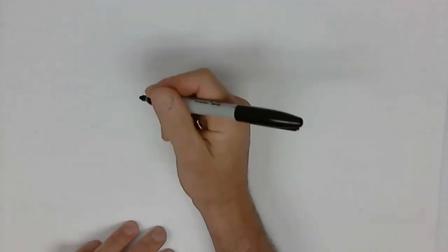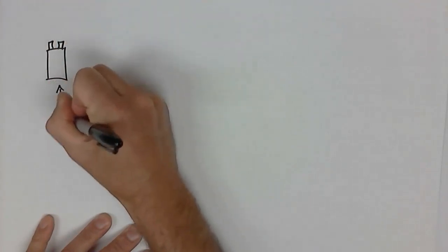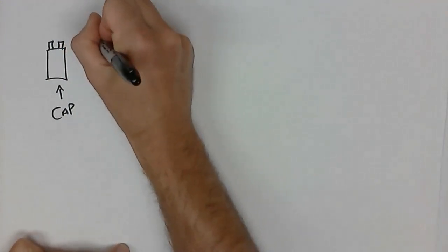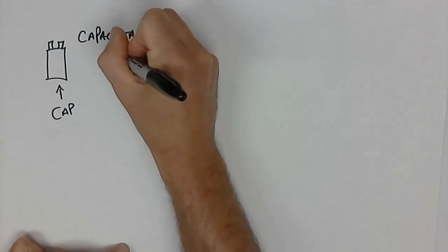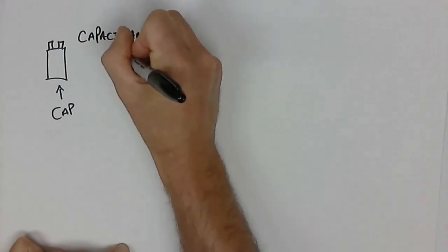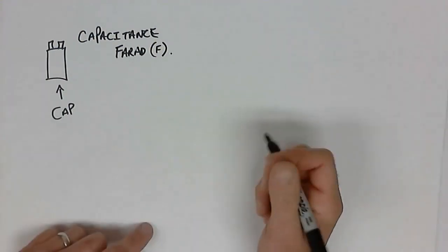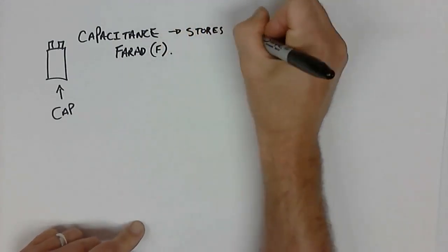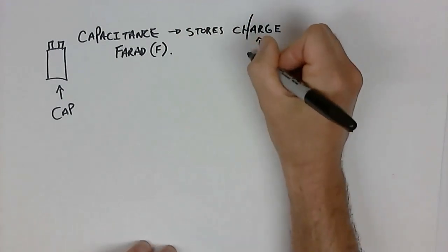First, we want to understand how to calculate the stored charge of a capacitor. This capacitor has a capacitance, measured in farads, represented with an F. If we want to know how much charge it can store — a capacitor stores charge — we can calculate that, because charge is actually going to be measured in Coulombs.